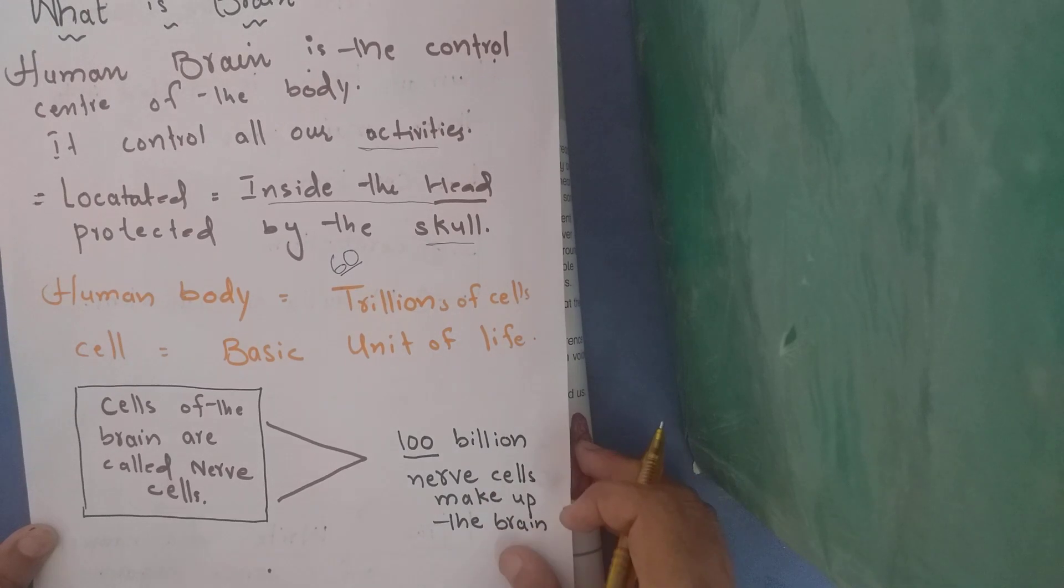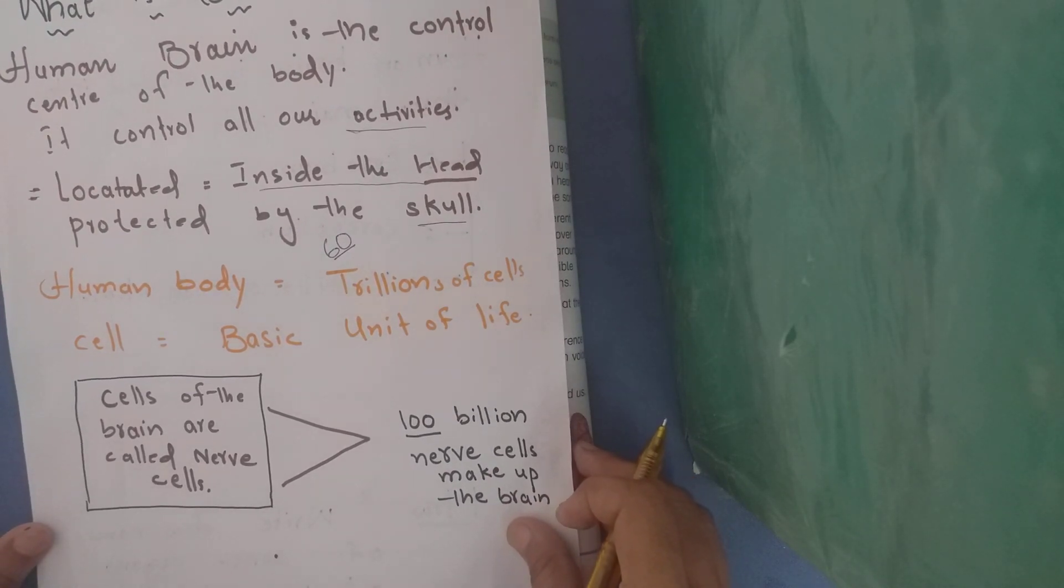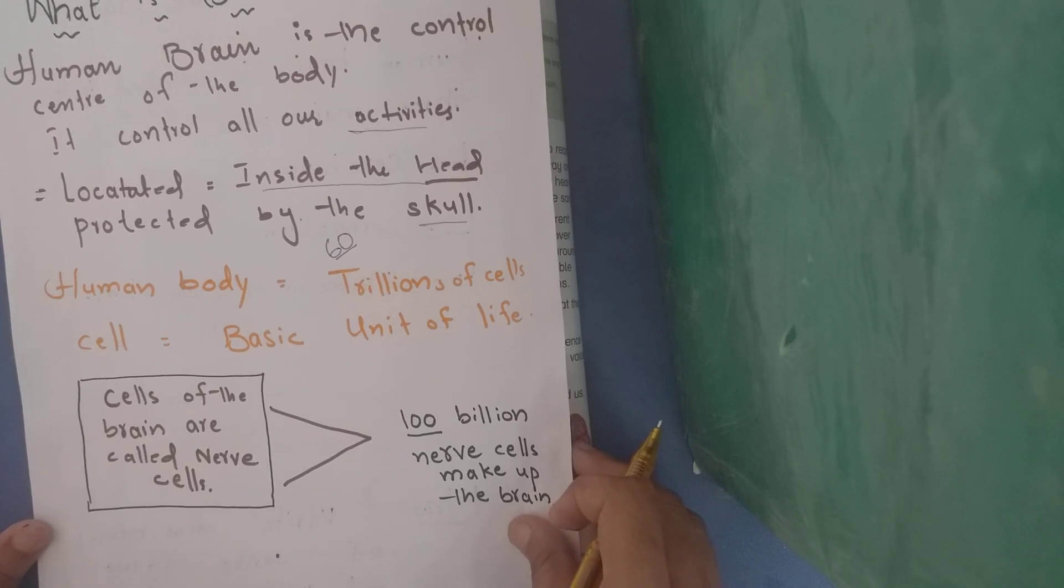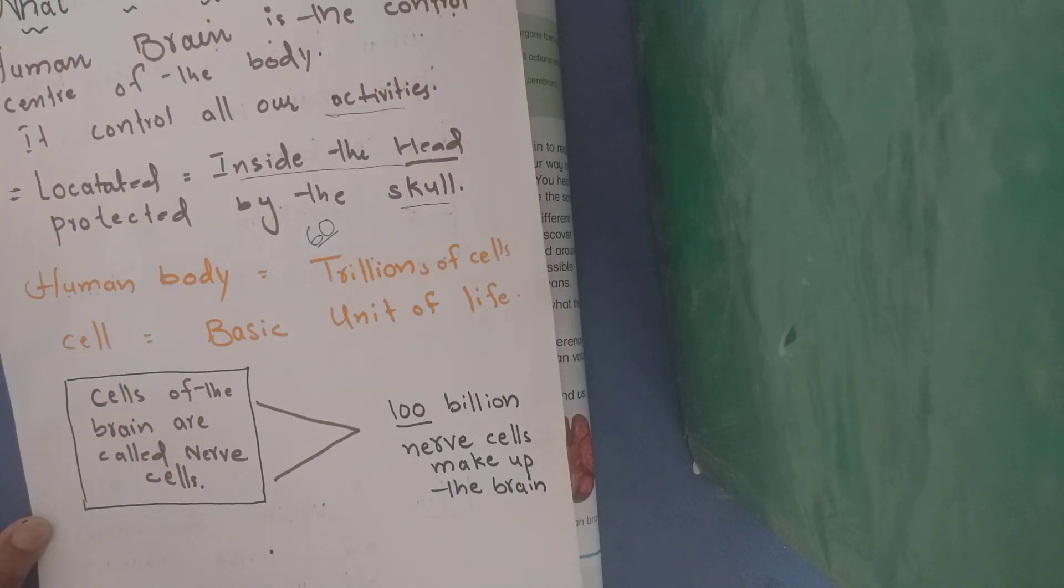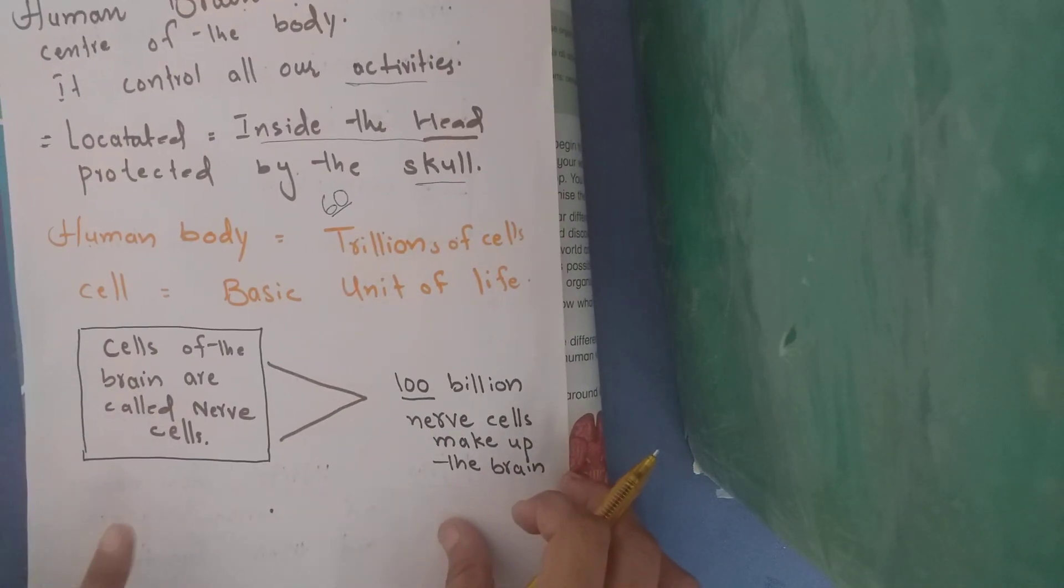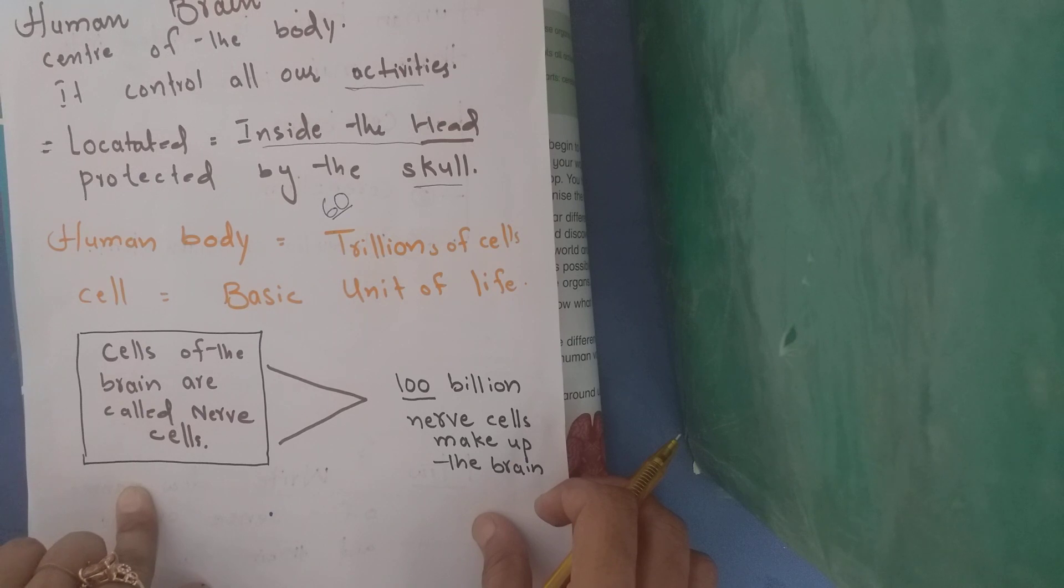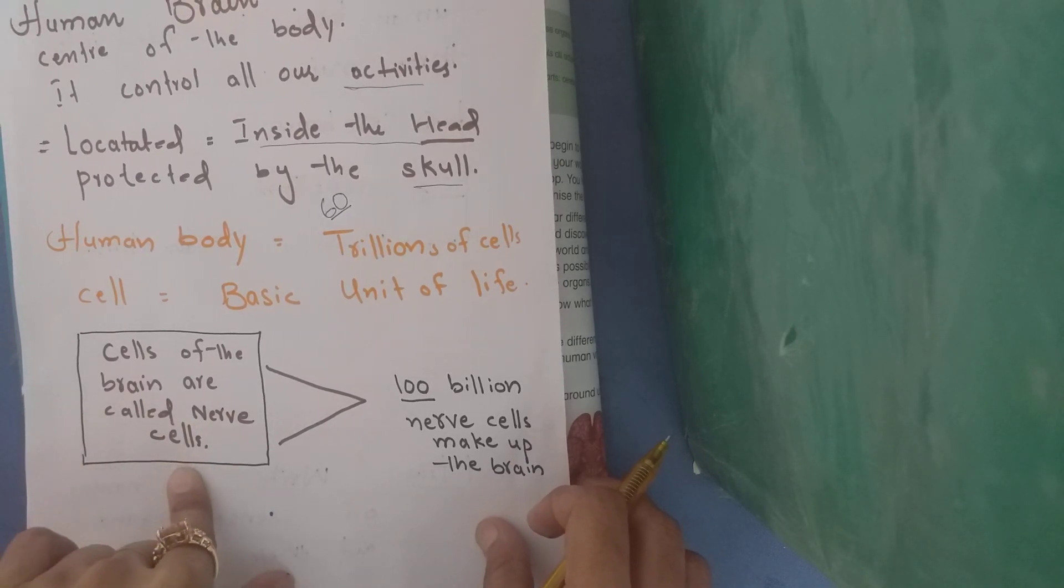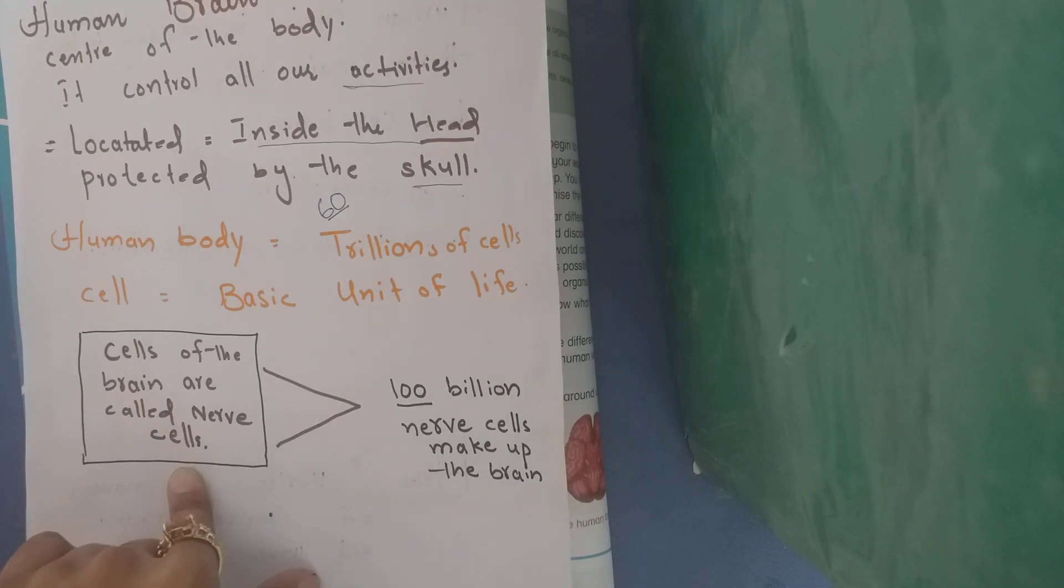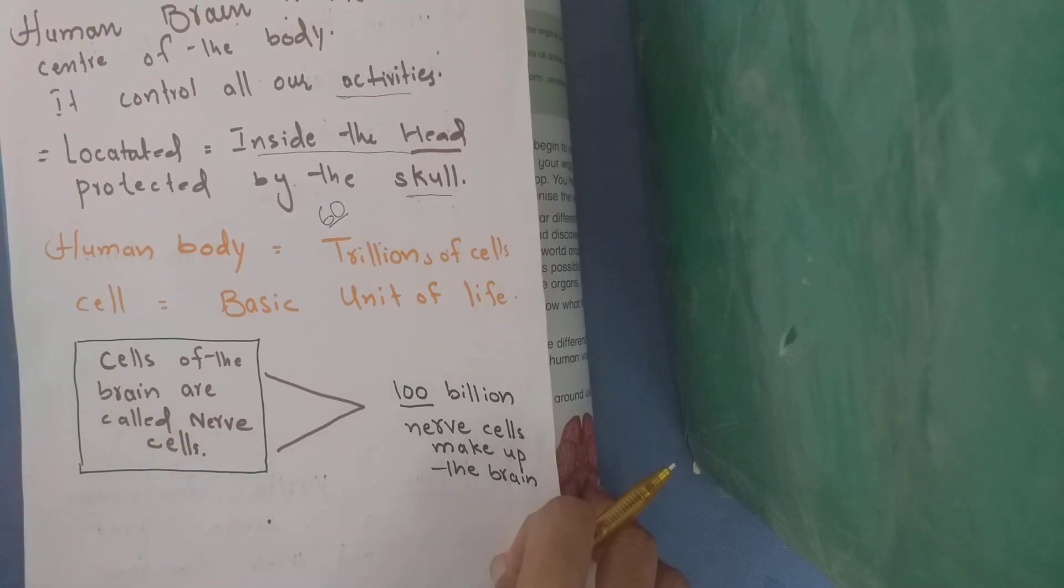Our body is made of cells. So the cells of brain are called nerve cells. The cells of brain are called nerve cells.